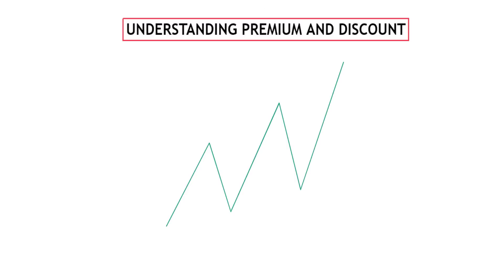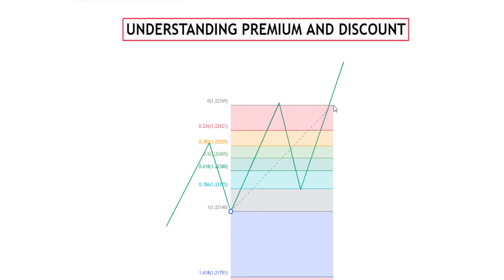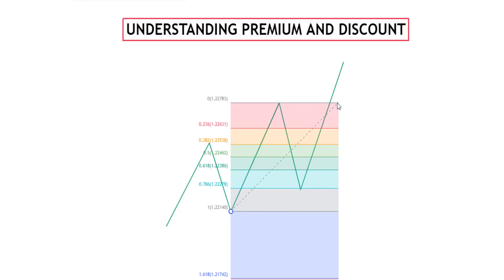Pick your Fibonacci tool and place it right here. This is an uptrend. We'll place it right at this higher low, which is the swing low, and take it to the higher high, the swing high. Let me show you how to set up your Fibonacci tool like a professional.